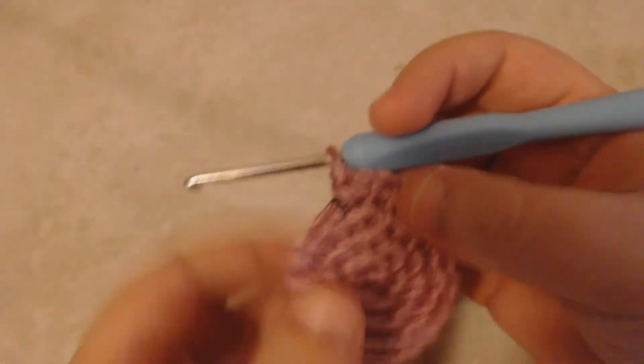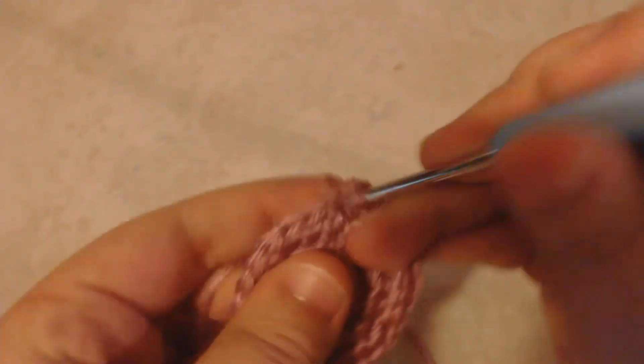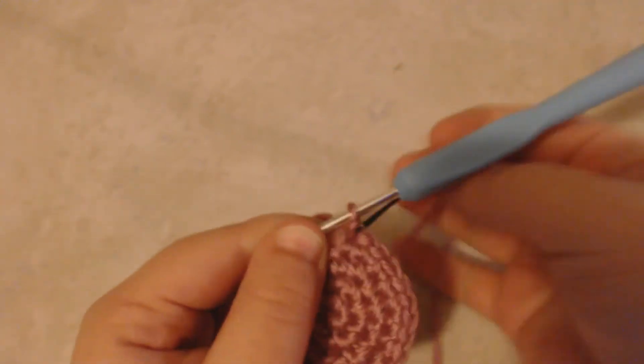Now I'm going to single crochet for a couple of rows to lengthen the wig cap. I'm going to go on for six rows but you can make the doll's wig cap longer or shorter depending on the look you want.